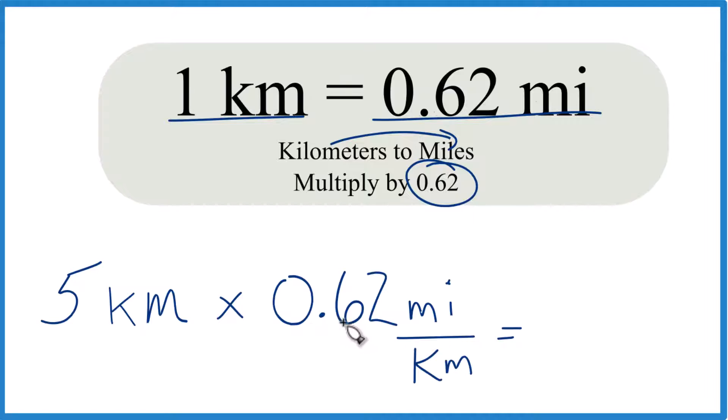So now when we multiply 5 times 0.62 miles, we end up with 3.10, which is 3.1. And since we have kilometers on the top and the bottom, they cancel out, we're left with miles.